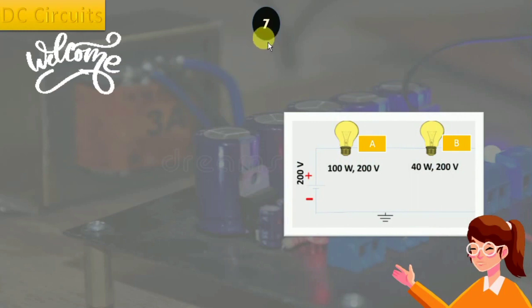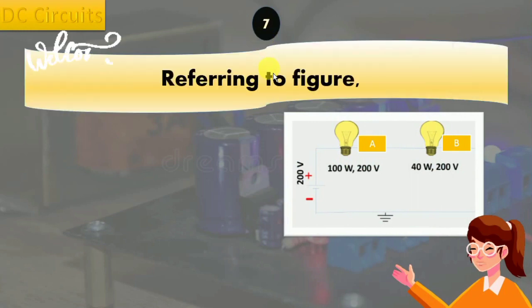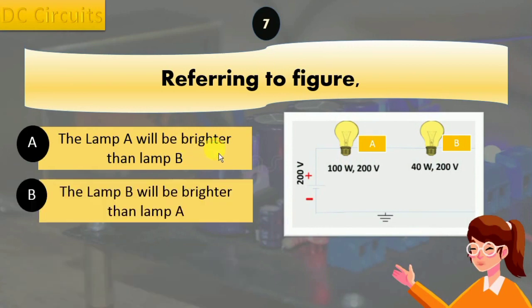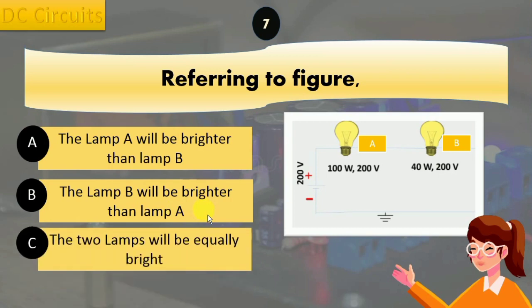DC circuits question number seven. Referring to figure, option A: the lamp A will be brighter than lamp B. Option B: the lamp B will be brighter than lamp A. Option C: the two lamps will be equally bright.